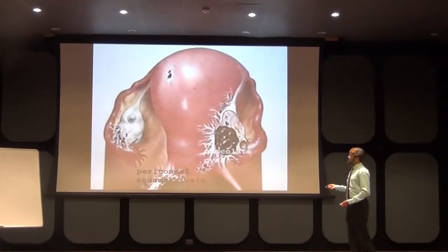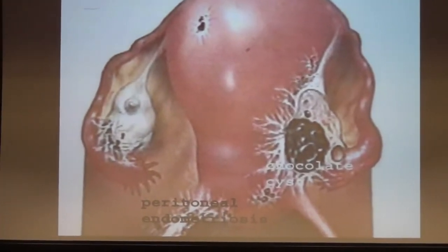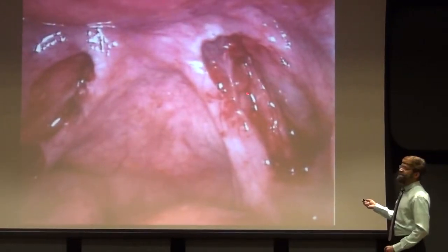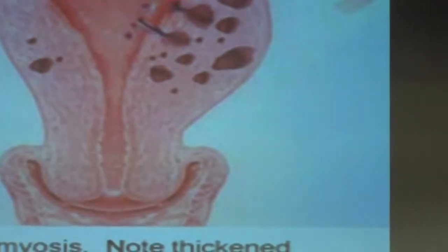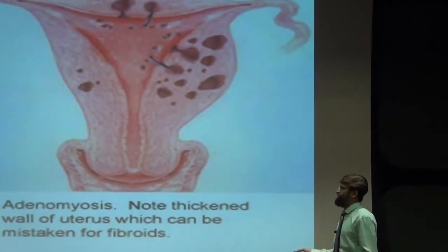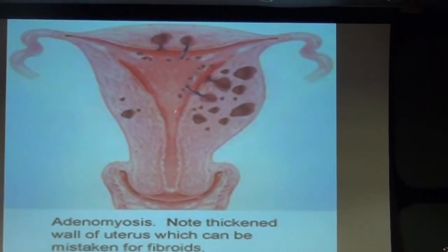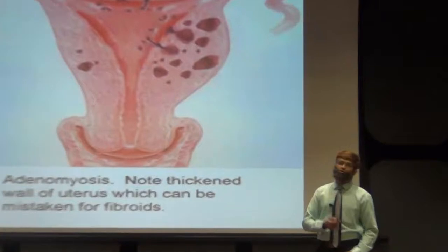Here you can see the peritoneum implants and the chocolate cyst ovary — bilateral involvement. In the laparoscopic view you can see the bleeding and the chocolate cyst ovary. Here is also a photograph of adenomyosis, that is endometriosis internal. Note the thickened area of the wall of the uterus, which can be mistaken for fibroids. So in the differential diagnosis, fibroids can also be included, because fibroids mimic endometriosis.